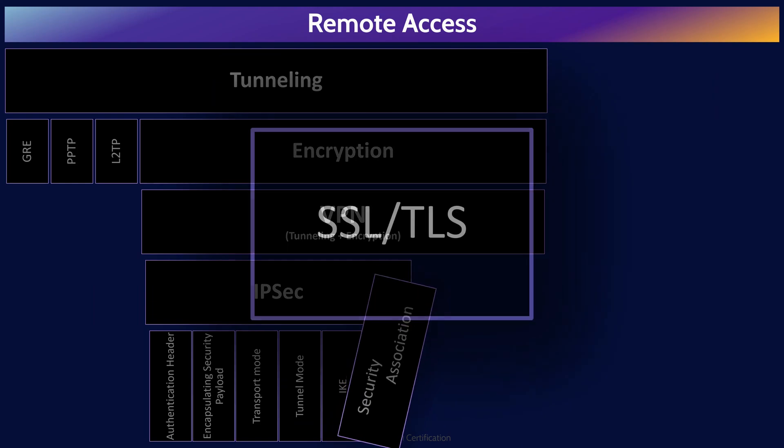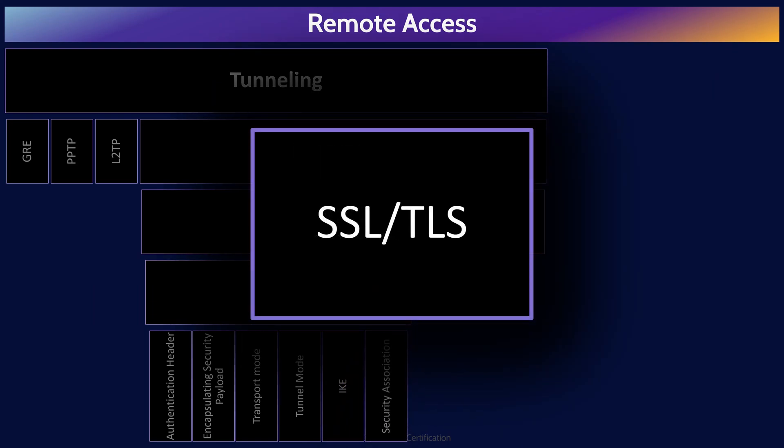Another protocol commonly used for establishing VPNs is SSL/TLS. SSL, Secure Socket Layer, was the name of the protocol for the first three major versions. It was then renamed Transport Layer Security, TLS, to better reflect that it operates at layer four, the transport layer of the OSI model. So SSL/TLS are the same protocol, and TLS is just the name of the most recent versions. TLS was primarily created to authenticate and encrypt the connection between a web browser and a web server, but it can also be used to secure other types of connections and allow you to create a VPN.